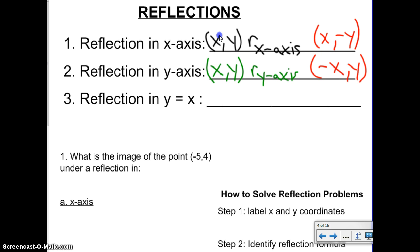And reflection in y equals x is the easiest one. If you have a point (x, y) and you reflect it in y equals x, the points just switch. So your new points are (y, x). All right, so now let's see how these are going to work in action. Let's see some problems.